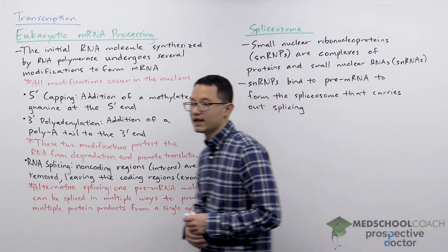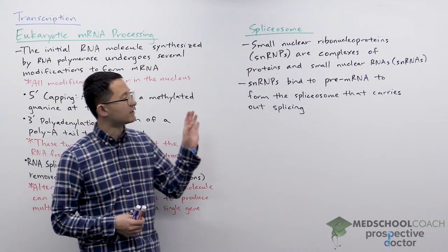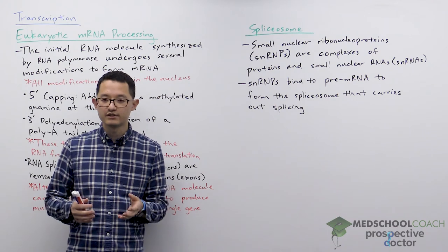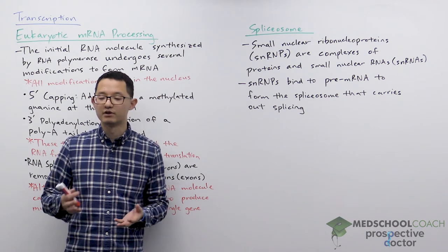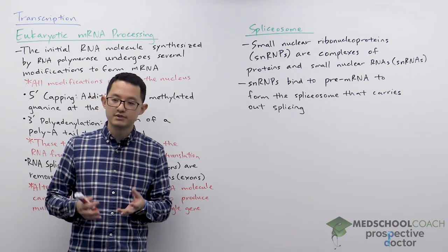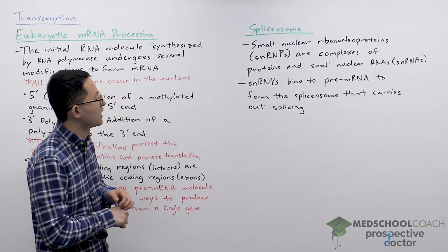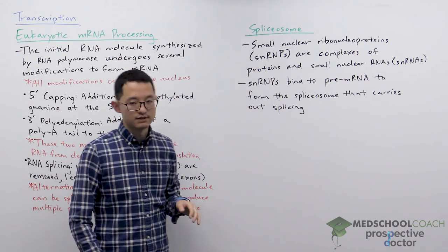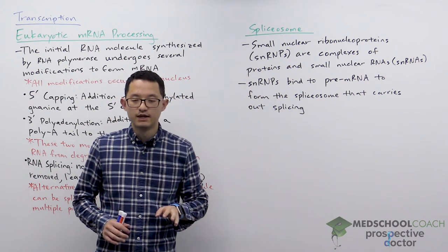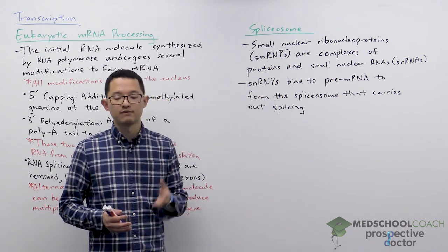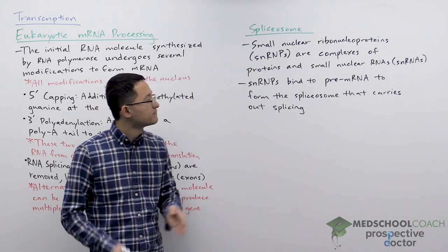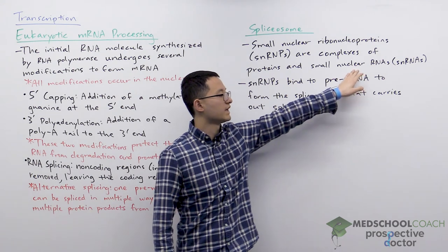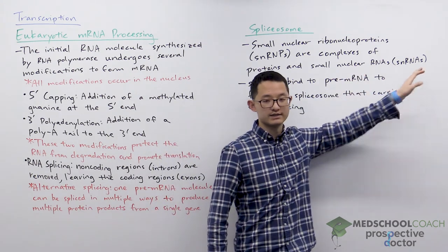Okay so the last thing I want to talk about is the machinery for splicing. It is the spliceosome. Now the spliceosome is a very large RNA and protein complex and there's some terms that you need to be familiar with for the exam. So first of all small nuclear ribonucleoproteins are called SNRPs. SNRPs are complexes of RNA and protein. Now since we're in the nucleus the RNA are called small nuclear RNAs, SNRNAs.